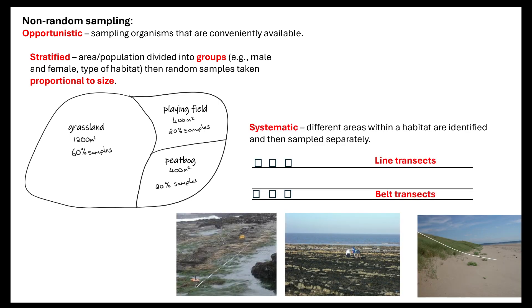We can do systematic sampling. This is where different areas within a habitat are identified and then sampled separately. We can use a line transect where we place a tape measure down and then every meter to every two meters we're going to put our quadrat down and again we're going to sample. Or we can put a belt transect where we have two tape measures and we are sampling everything in between those two lines.